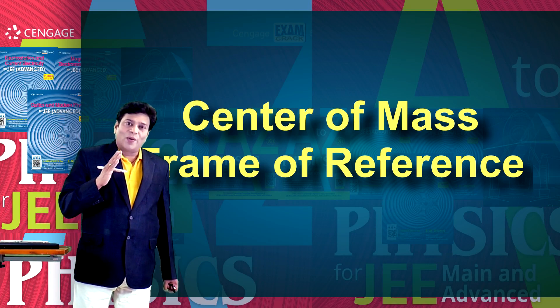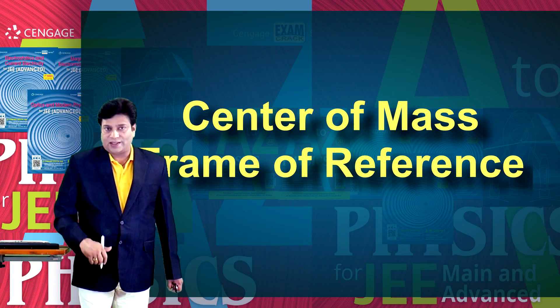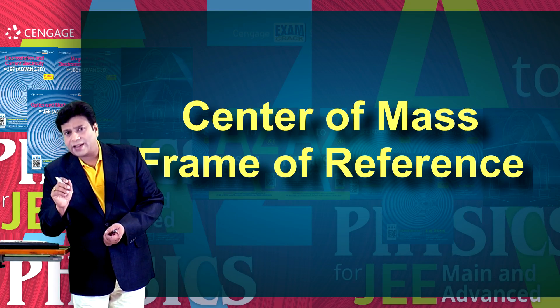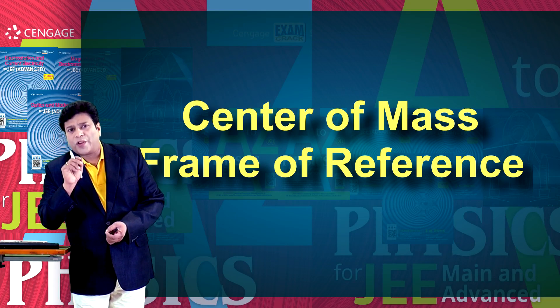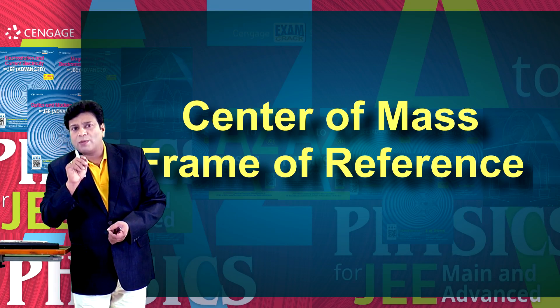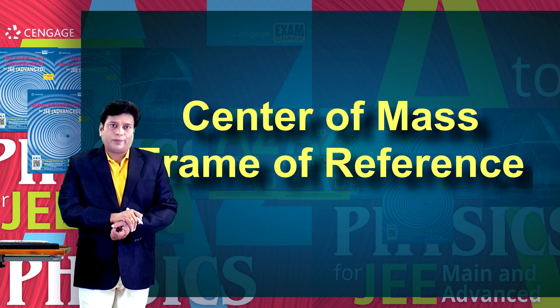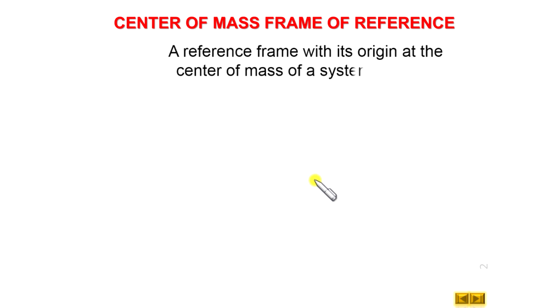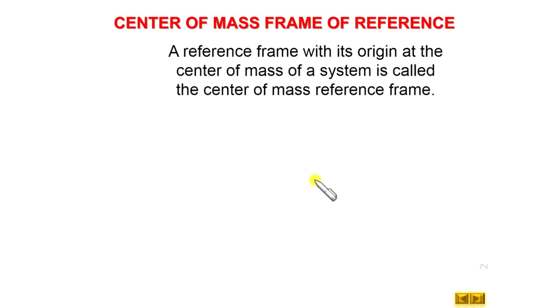Let us discuss about frame of reference. We know a frame of reference is a set of coordinate axes where the observer locates himself at the origin of the system. So here we can say a frame of reference with its origin at the center of mass of the system is called the center of mass frame of reference.